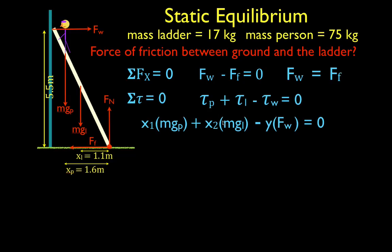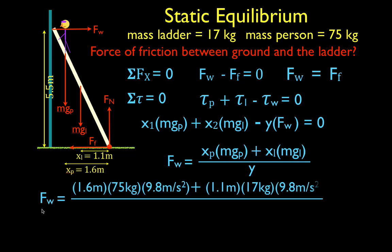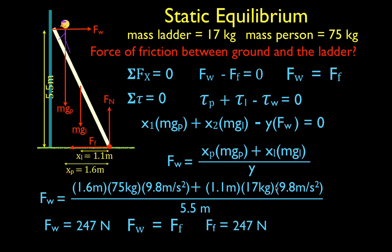Here's our equation with torques from the person, the ladder, and the wall. Solving for the force from the wall: move the wall torque to the other side and divide by the lever arm from the wall. This gives F_wall equals the torque of the person plus the torque from the ladder, divided by the lever arm from the wall force. Plugging in all the values — the lever arm and force for the person, the lever arm and force for the ladder, divided by the 5.5-meter lever arm for the wall — you get that the force from the wall is 247 newtons. Since the force from the wall equals the friction force, the friction force is also 247 newtons.